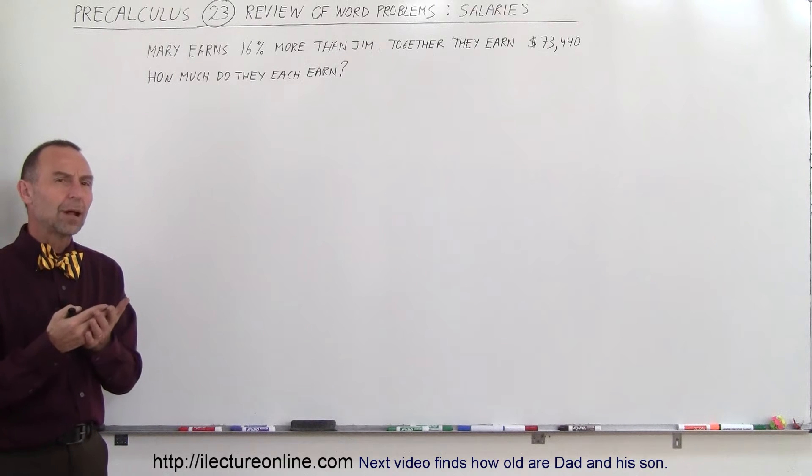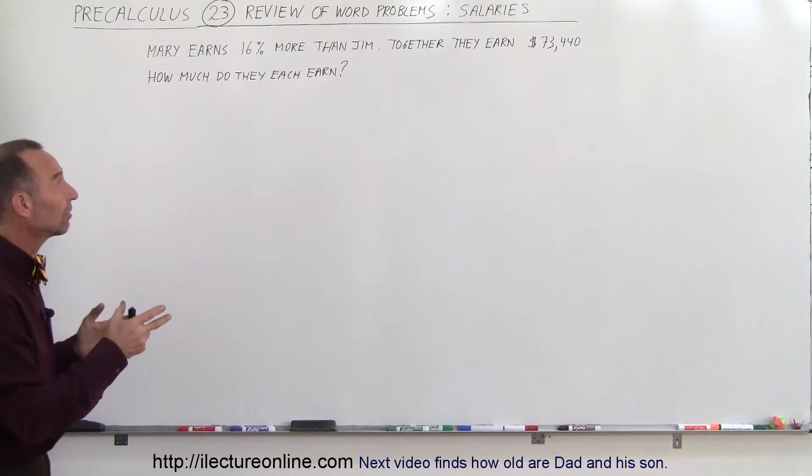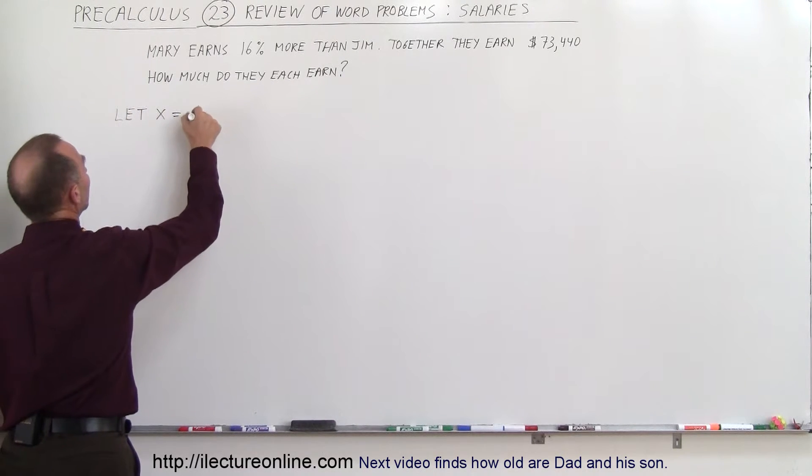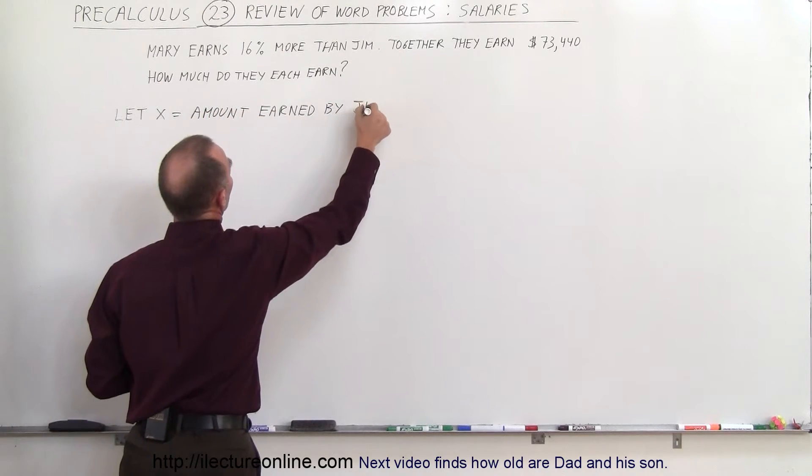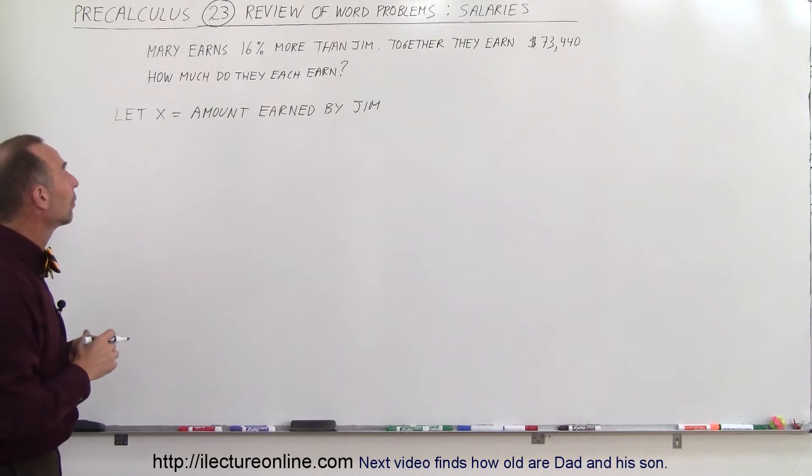We start off the problem by letting x represent the smallest amount earned, in this case that's what Jim earns. So let x equal the amount earned by Jim. It's very important that we very clearly define what each variable represents.